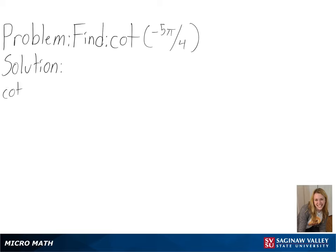Our problem is to find cotangent of negative 5π over 4. To solve this, we will be using a unit circle.